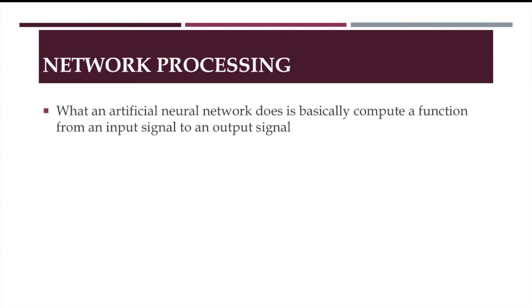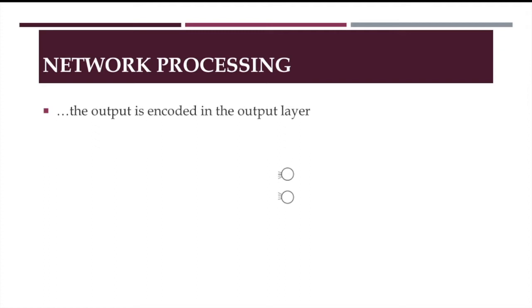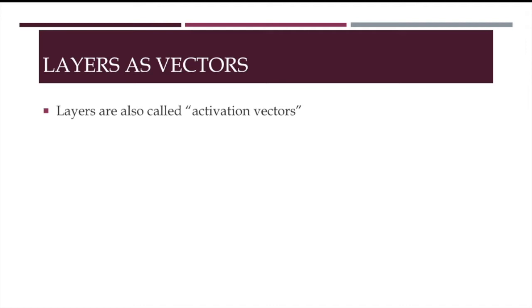What an artificial neural network does is simply compute a function from an input signal to an output signal. The input is encoded in the input layer. Then some processing occurs in the hidden layers if there are any. Then finally the output is encoded in the output layer.